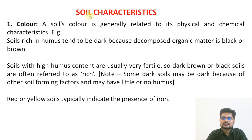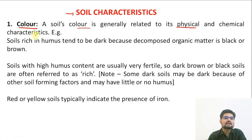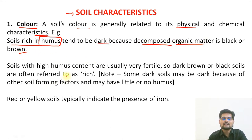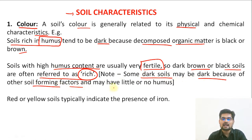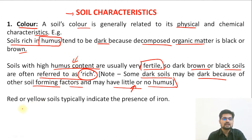Now let's learn the soil characteristics. The first is color. Soil color is generally related to its physical and chemical characteristics. Soils rich in humus tend to be dark because of the decomposed organic matter, which is largely black and brown. Soils with high humus content are usually fertile. However, not all dark soils are rich — only those dark soils with humus content are rich. Red or yellow soils typically indicate the presence of iron.